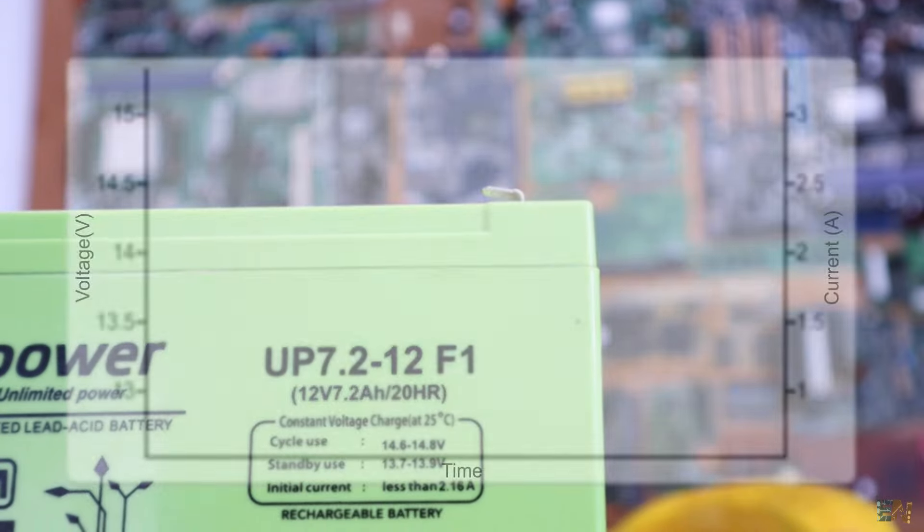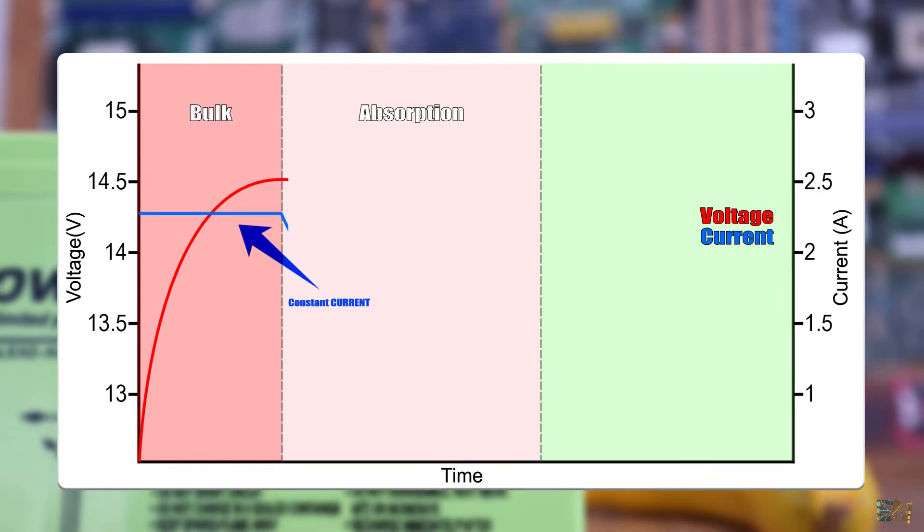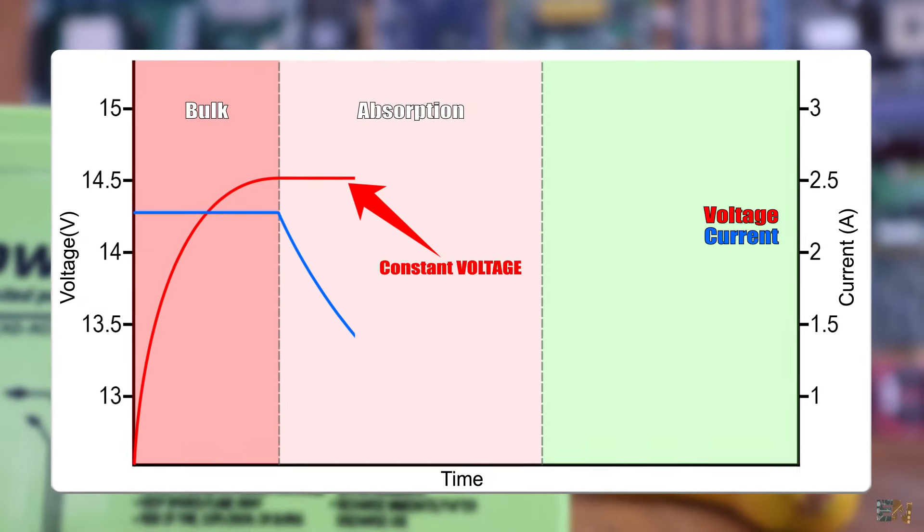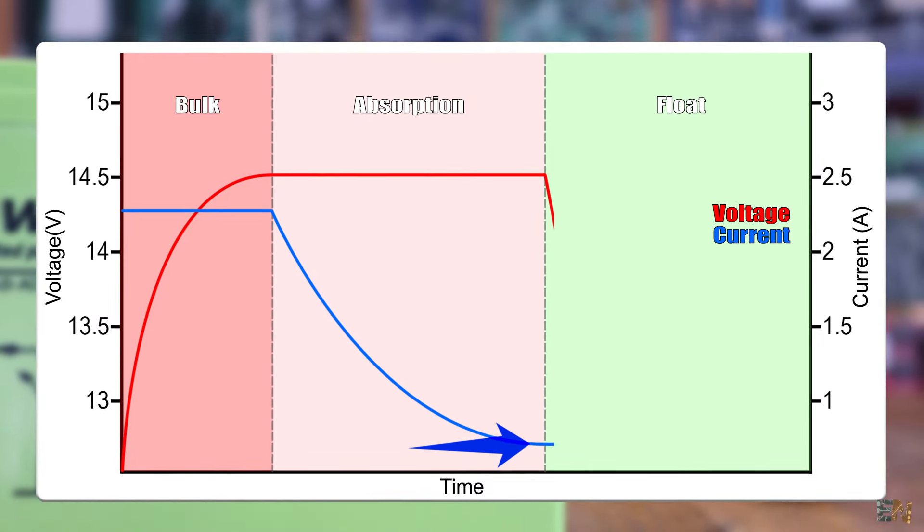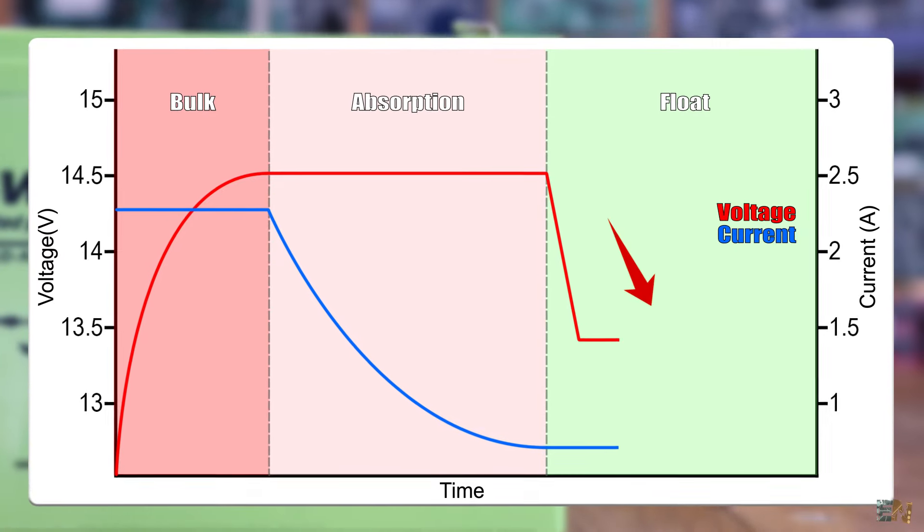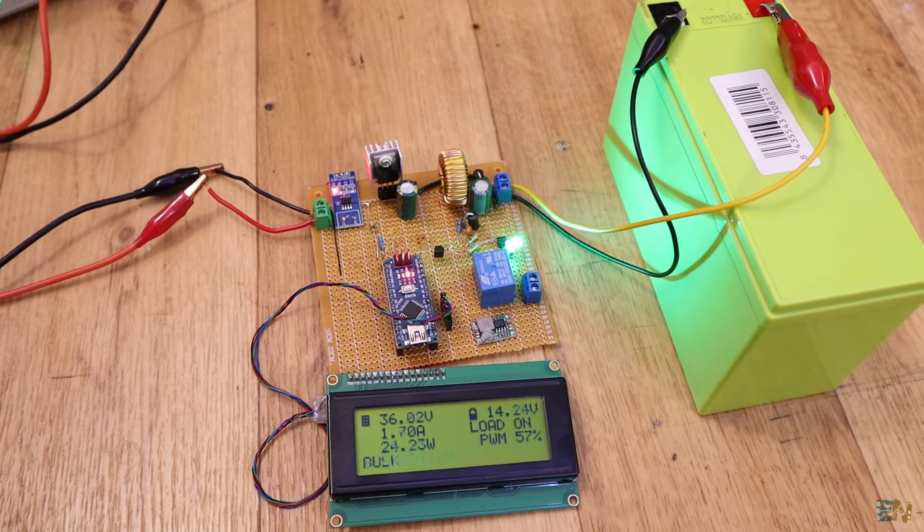In bulk, we limit the current and we don't care about the voltage while the battery is charging up. In absorption, we keep a constant voltage and the current value will drop and drop. Finally, in the float mode, we keep a constant lower voltage and a very low current value. So now let's see the code and understand how we do that.